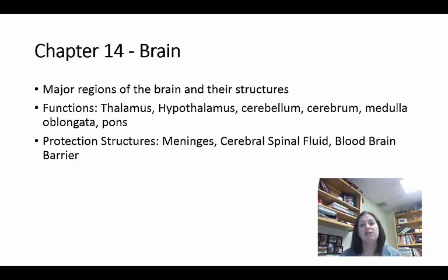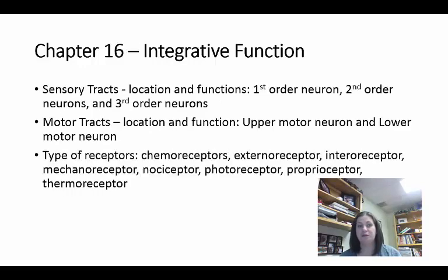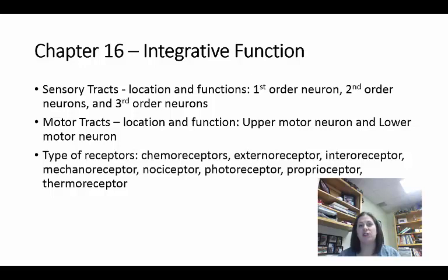Those are the main things to focus on in chapter 14. Moving on to chapter 16 — integrative function — where we integrate everything about the brain, sensations, and put them together. Let's look at sensory tracks first. With sensory tracks, you need to remember there are three of them: first order neurons, second order neurons, and third order neurons — all part of the sensory tracks.